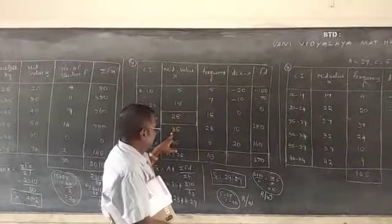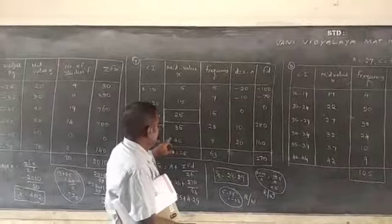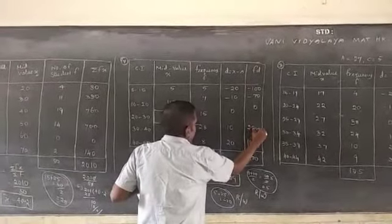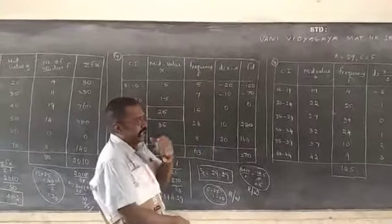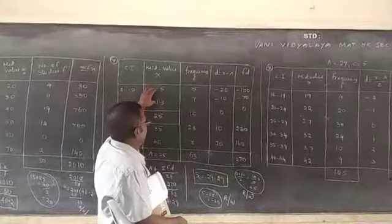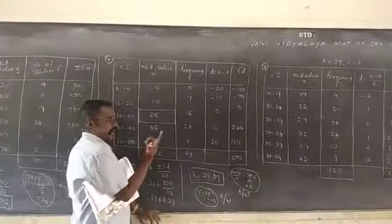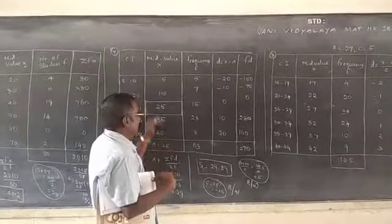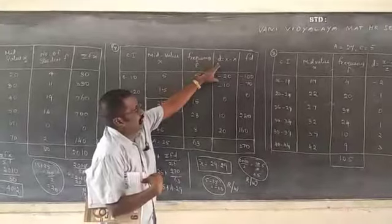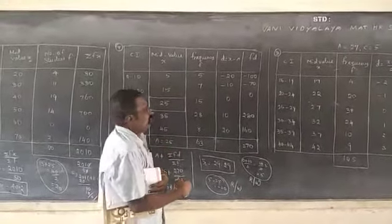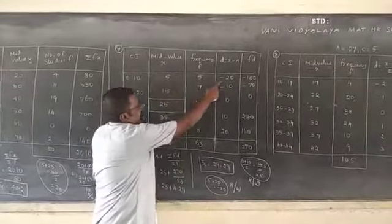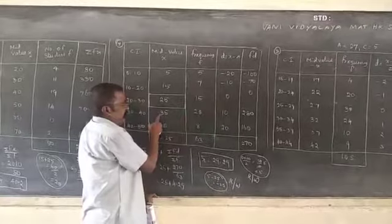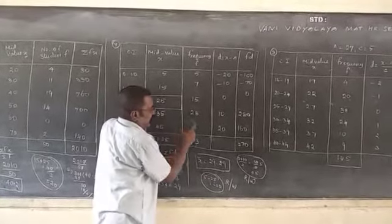This is called D equal to X minus A. X minus A equal to what? X equal to 5, 5 minus 25 equal to minus 20. Similarly, 15 minus 25 equal to minus 10. 25 minus 25 equal to 0. Next, X is 35, 35 minus 25 equal to 10.